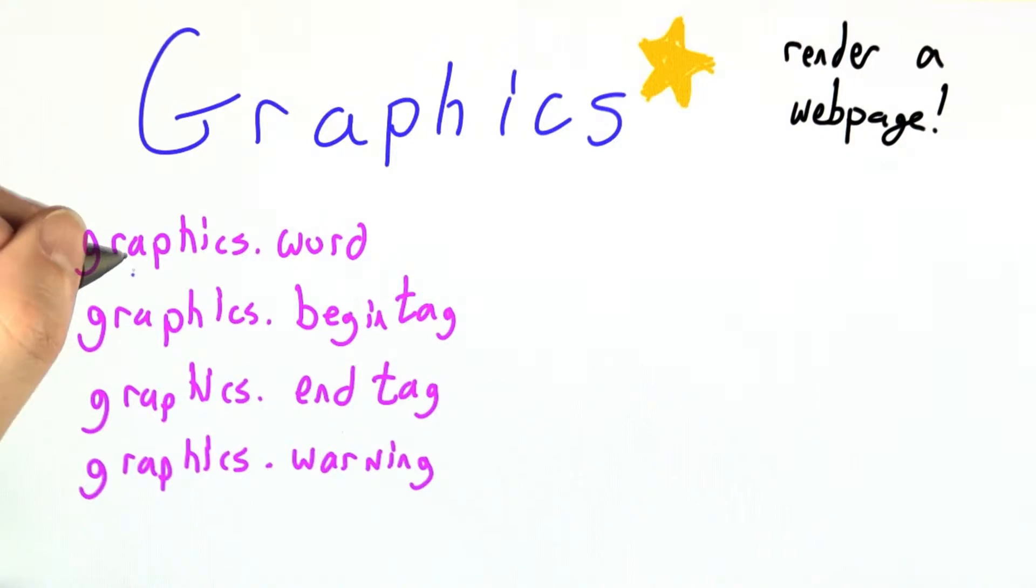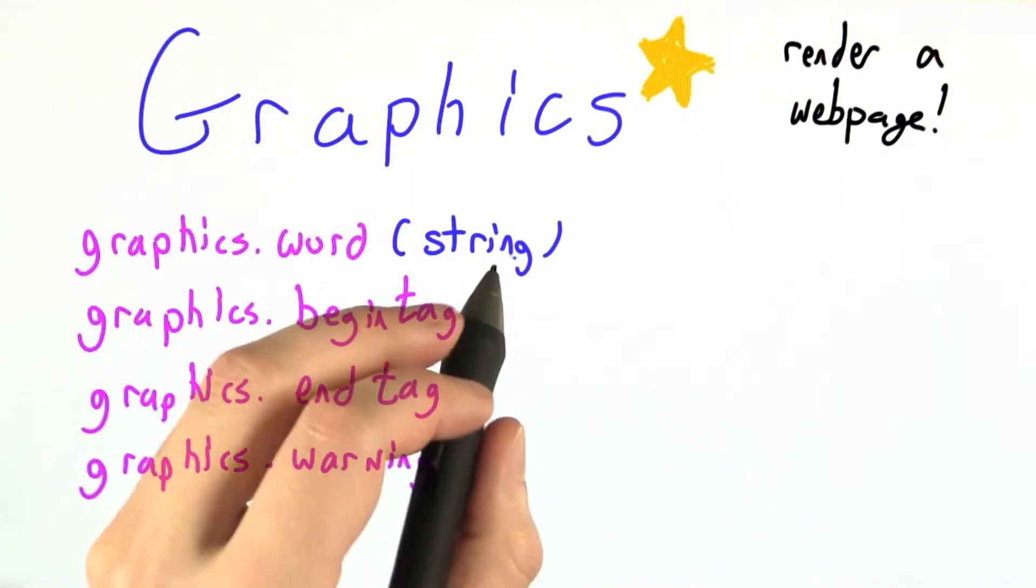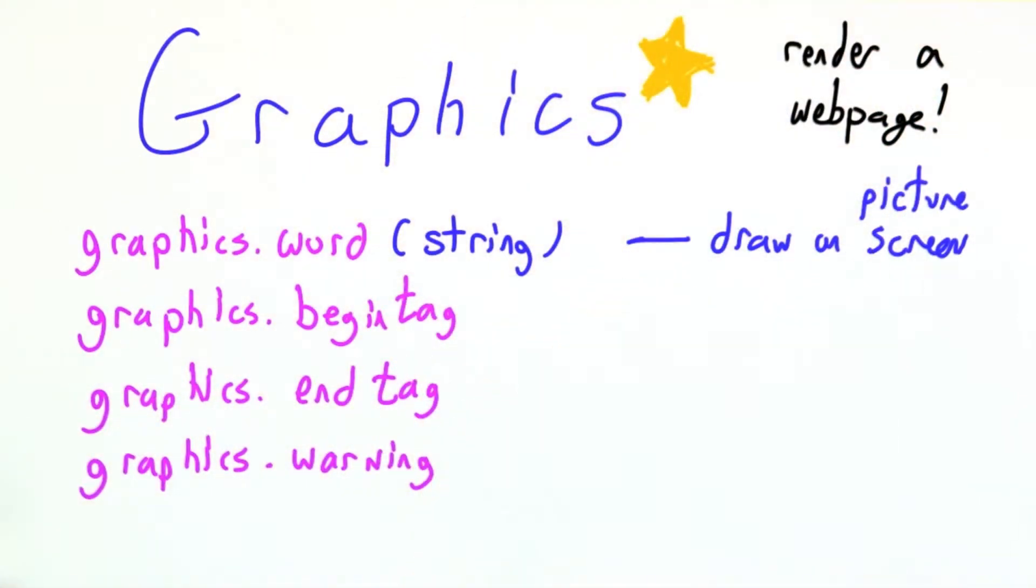So there are four key functions in our graphics library that are worth knowing about. In graphics.word, you pass in a single word, and we'll draw it on the screen or on the picture we're making for you.